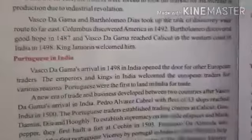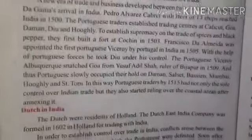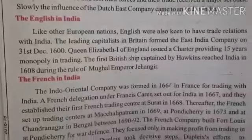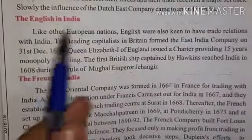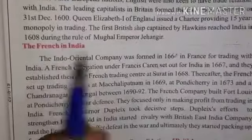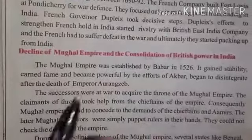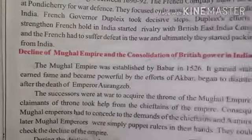The main things we covered were: first the Portuguese arrived, then the Dutch, the English, and the French. After their arrival, we discussed the decline of the Mughal Empire and the consolidation of British power in India.